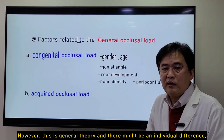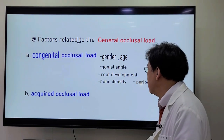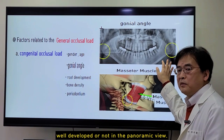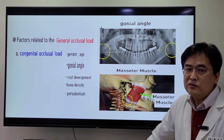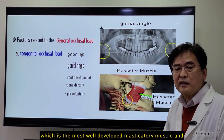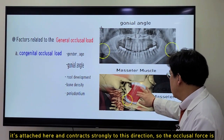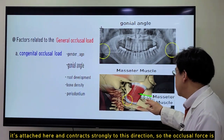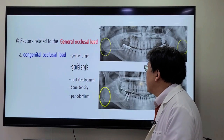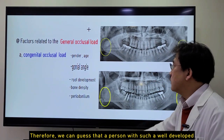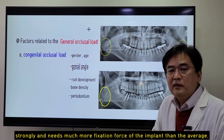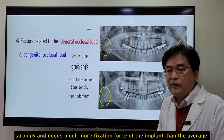However, this is the general theory and there might be individual differences. So it's worth paying attention to whether the gonial angle is well developed or not in a panoramic view. The gonial angle is the insertion of the masseter muscle — the most well-developed masticatory muscle — which attaches and contracts strongly. So the occlusal force is greatest at the molar area close to the gonial angle. Therefore, we can infer that a person with a well-developed gonial angle in panoramic view is able to chew strongly and needs much more fixation force of implant than the average.